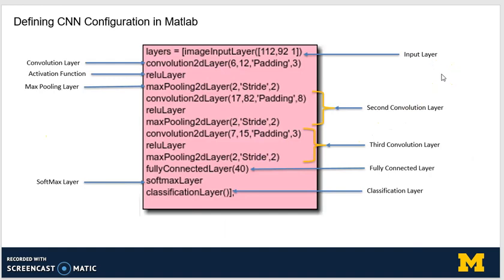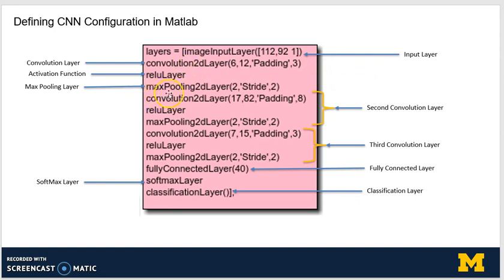Let's have a look at how CNN is defined in MATLAB. We have an image input layer, which has the same size as the image. Then we have a convolutional layer, whose first element is the size of the filter, the second element is the number of filters, and then we have the padding used around the input image. Then we have the activation unit, which is a ReLU. A ReLU is very helpful in deep learning because it does not reduce the learning rate as we continue to add more layers. This is followed by the max pooling layer for downsampling the image as it goes from one convolutional layer to the other.